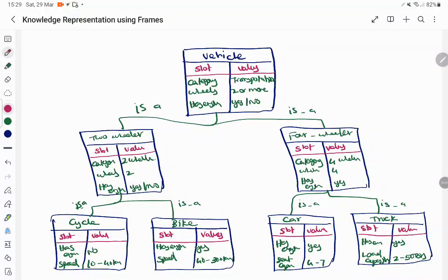For four-wheeler, the slots are category (four-wheeler), wheels (four), and has engine (yes, all four-wheelers will have an engine). Two types are car, which is a vehicle with seating capacity of 4 to 7 people, and truck, which is a vehicle with engine.